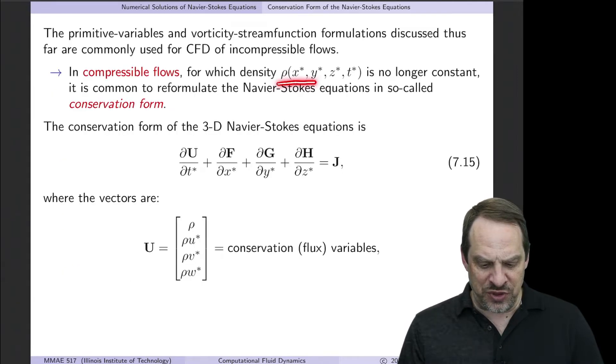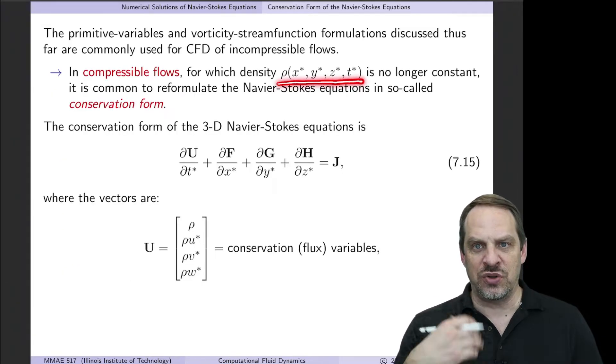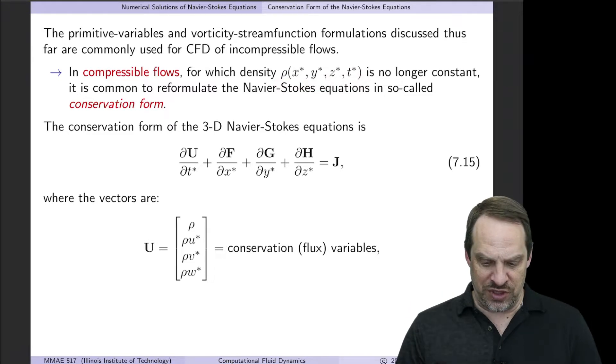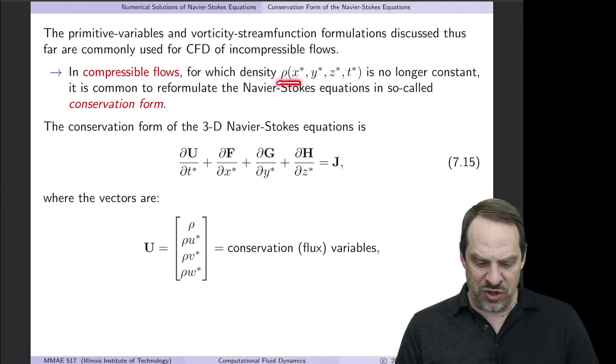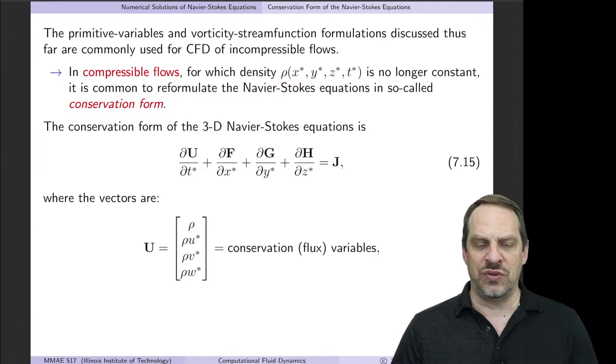So now for compressible flows, we also need the density. It's no longer a constant, as is the case for the incompressible case. So we will have a ρ for the density, and this is, again, the so-called conservation form.